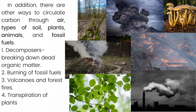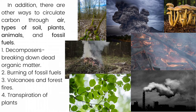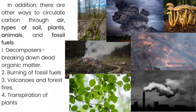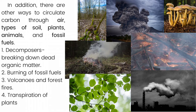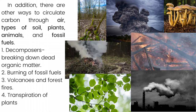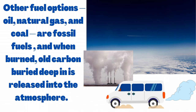In addition, there are other ways to circulate carbon through air, types of soil, plants, animals, and fossil fuels: 1. Decomposers breaking down dead organic matter. 2. Burning of fossil fuels. 3. Volcanoes and forest fires. 4. Transpiration of plants. Other fuel options — oil, natural gas, and coal — are fossil fuels, and when burned, old carbon buried deep underground is released into the atmosphere. The increasing concentration of carbon dioxide from the use of fossil fuels is related to global warming, climate change, and abnormal weather that we have seen in recent years.